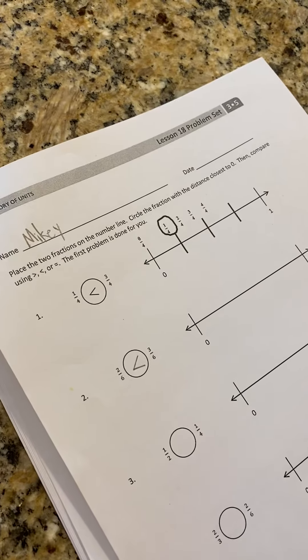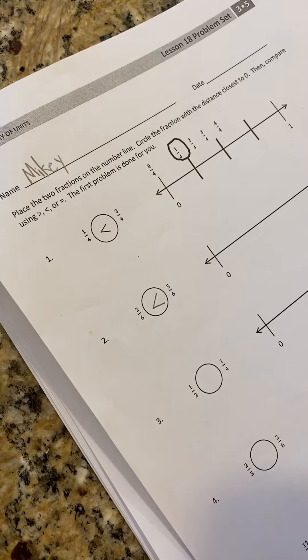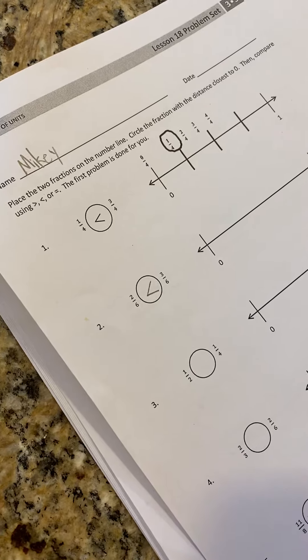Place the two fractions on the number line. Circle the fraction with the distance closest to zero. What does that mean, the distance closest to zero? What's closer to the left? That's right, which one is the smallest, right? Yeah. Okay, and then what? Then compare using greater than, less than, or equal to.